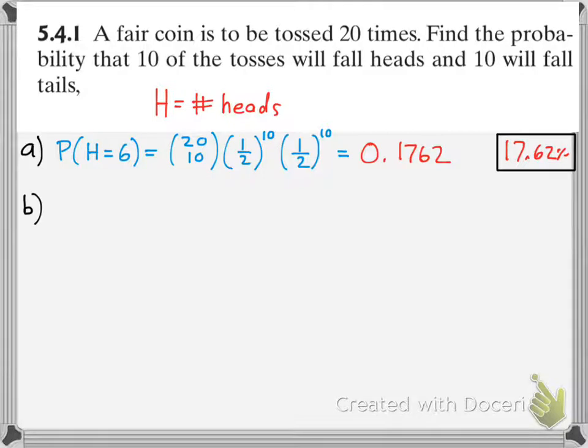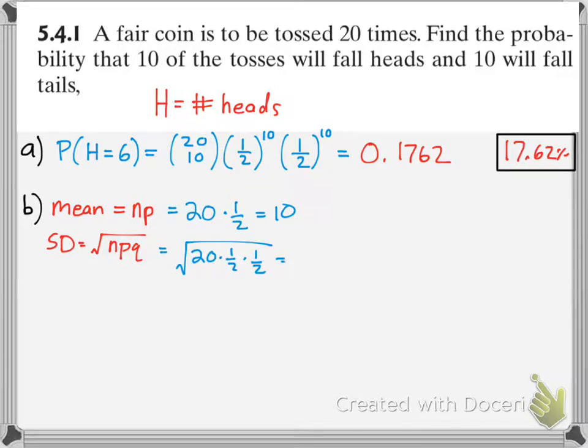Now, we'll do the same thing with the normal approximation. Same formula. Mean is n times p, or sample size times the probability of success. Our sample size is 20, and our probability is 0.5, so our mean is 10. So, our standard deviation would be the sample size 20 times 0.5 times the probability of failure, which is also 0.5, and you take the square root. And you get 2.2361, and that's our standard deviation.